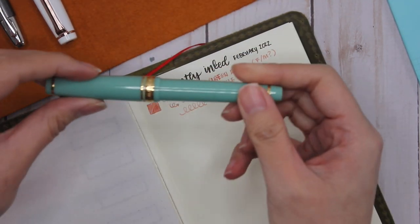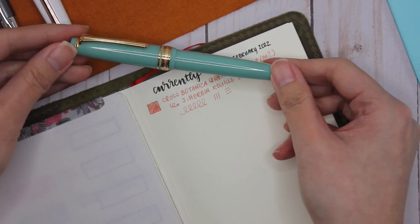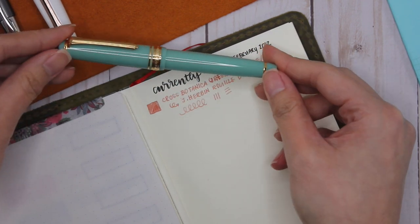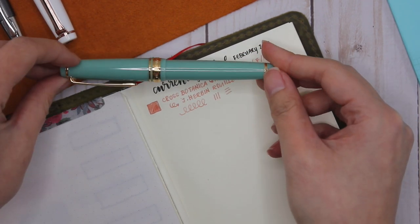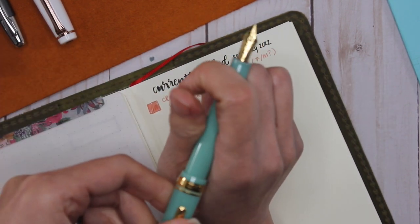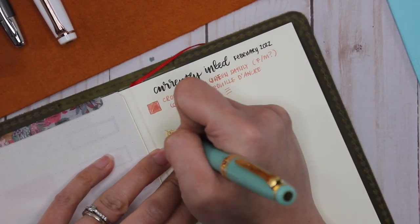So the next is my Sailor Pro Gear Slim in Dragon Palace. This was I think my second gold nib pen and I absolutely love it, and I do love the size of it as well. I can post this one quite easily.